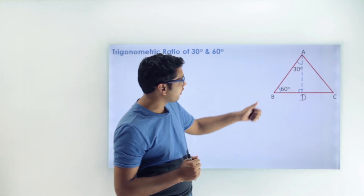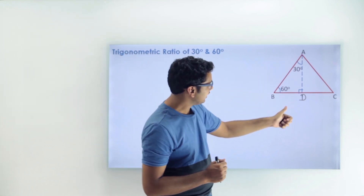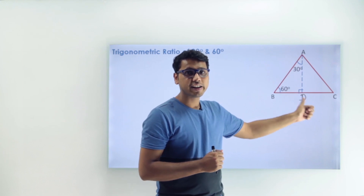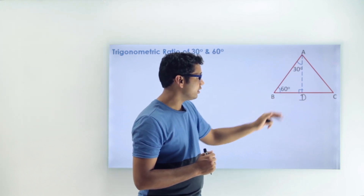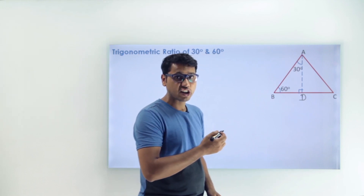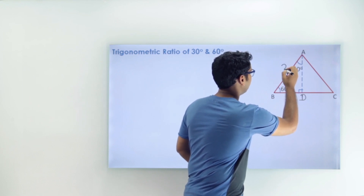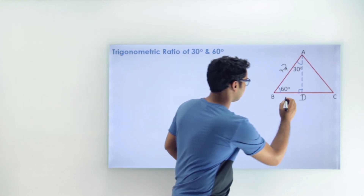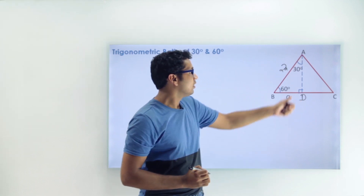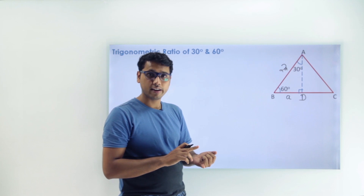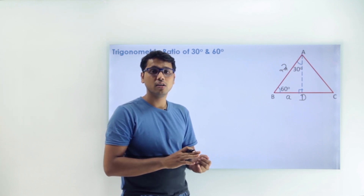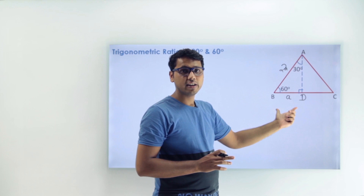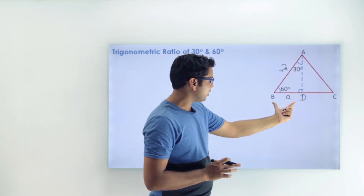Focus on triangle ABD. There is a right angle at D, and ABC is an equilateral triangle. Let's assume the side of the equilateral triangle to be 2A. Because AD is both an angle bisector and a median for an equilateral triangle, BD will equal A.